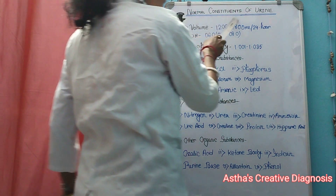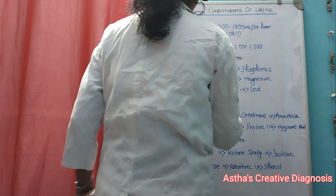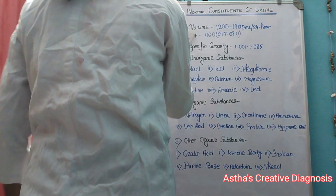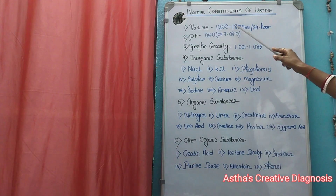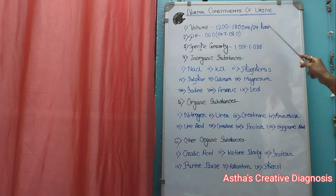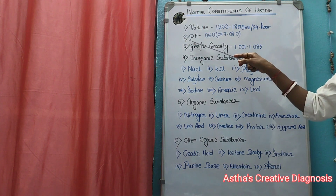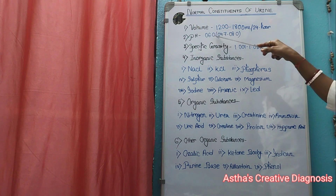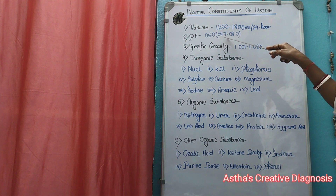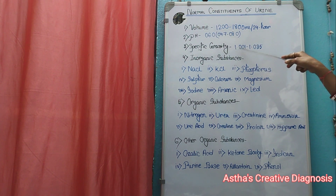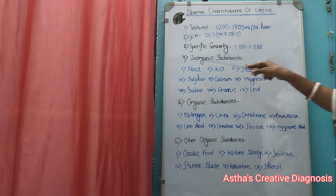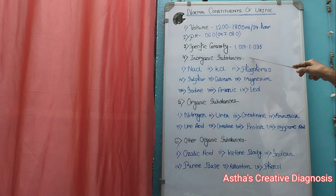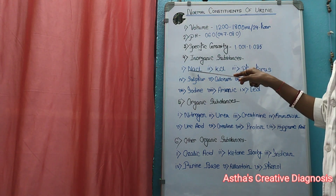Normal constituents of urine. Volume is 200 to 800 ml. pH is 6.0, within a range of 4.7 to 8.5. Specific gravity is 1.001 to 1.035. Urine is characterized by the following substances.